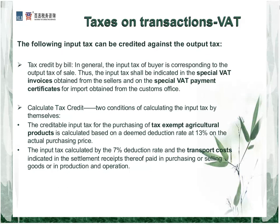The next situation is calculated tax credit. If you purchase some kinds of agricultural products or use some transport services, you should calculate the tax credit by yourself. For agricultural products, the deduction rate is 13 percent, and for transport costs, it should be 7 percent.